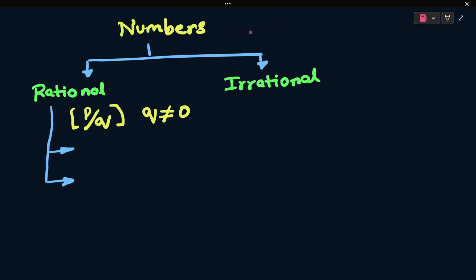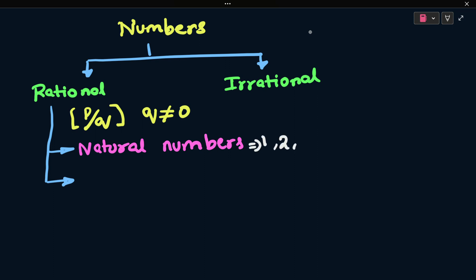Natural numbers. Natural numbers are the numbers which start from 1, 2, 3 and go on. Natural numbers are the positive numbers which start from 1 and can go on infinitely.